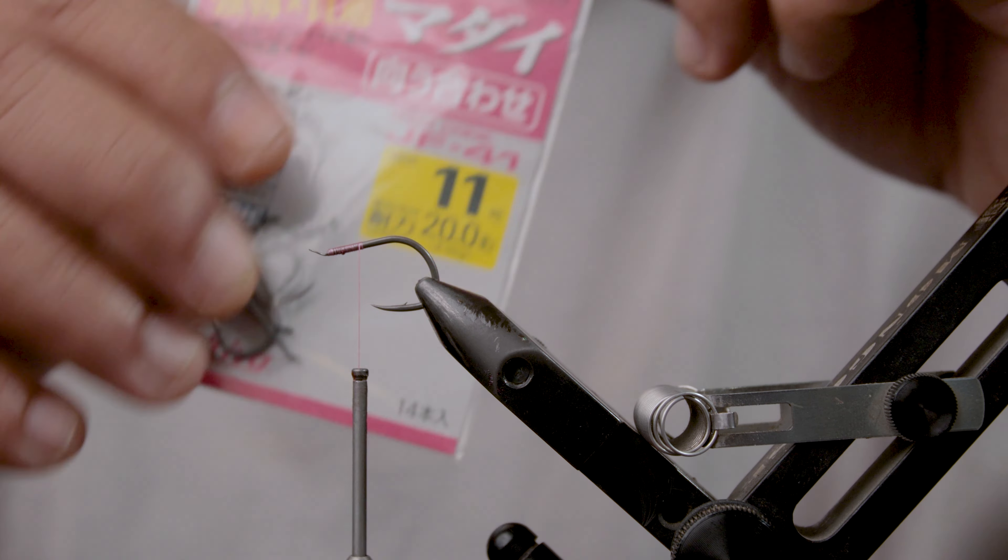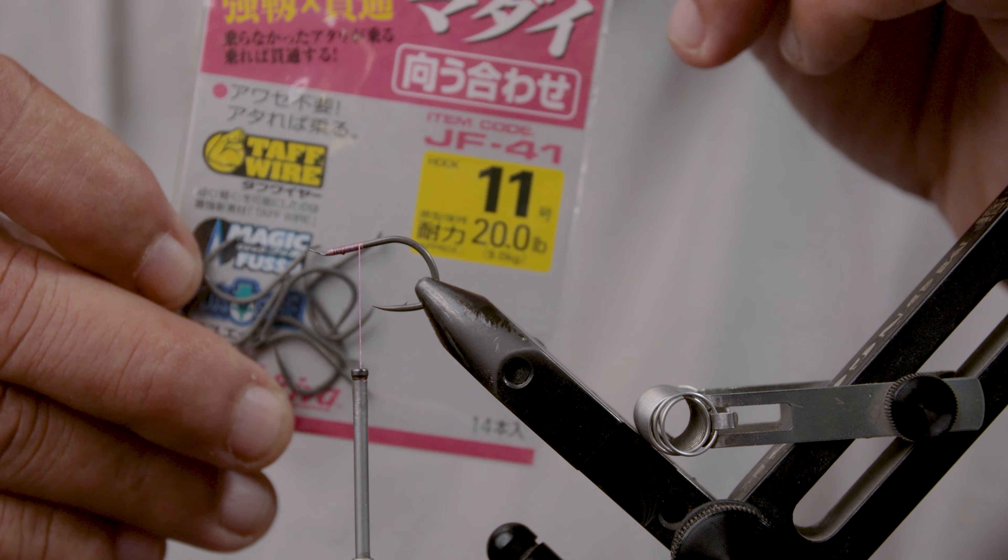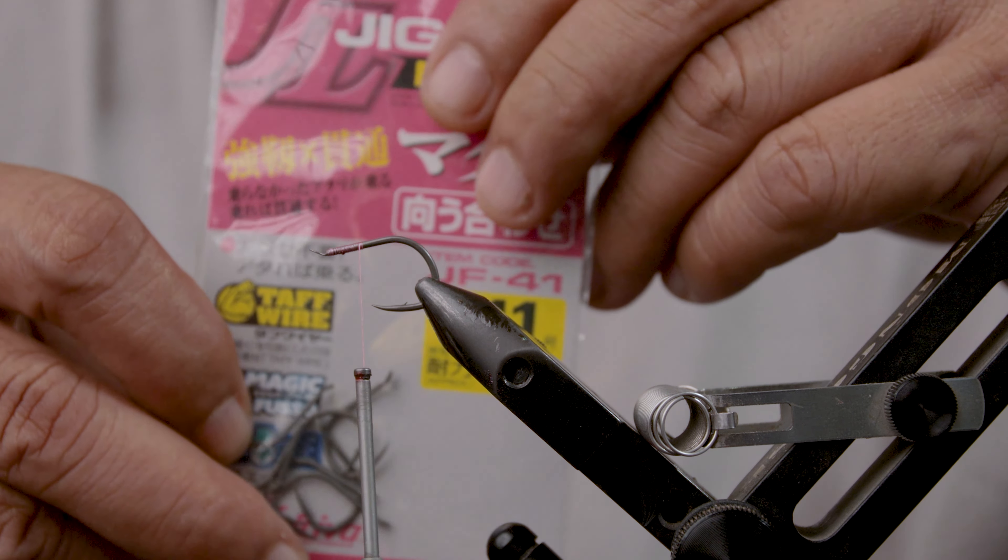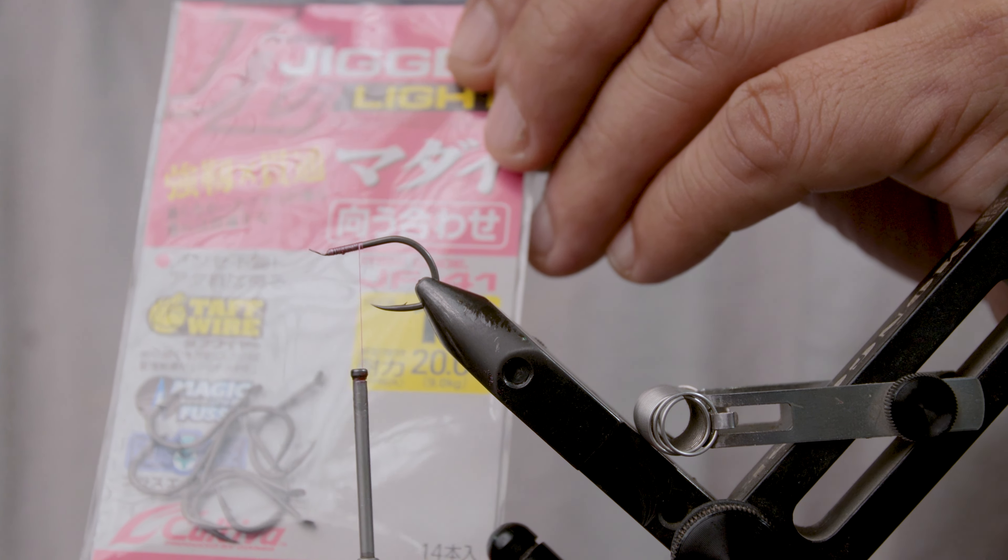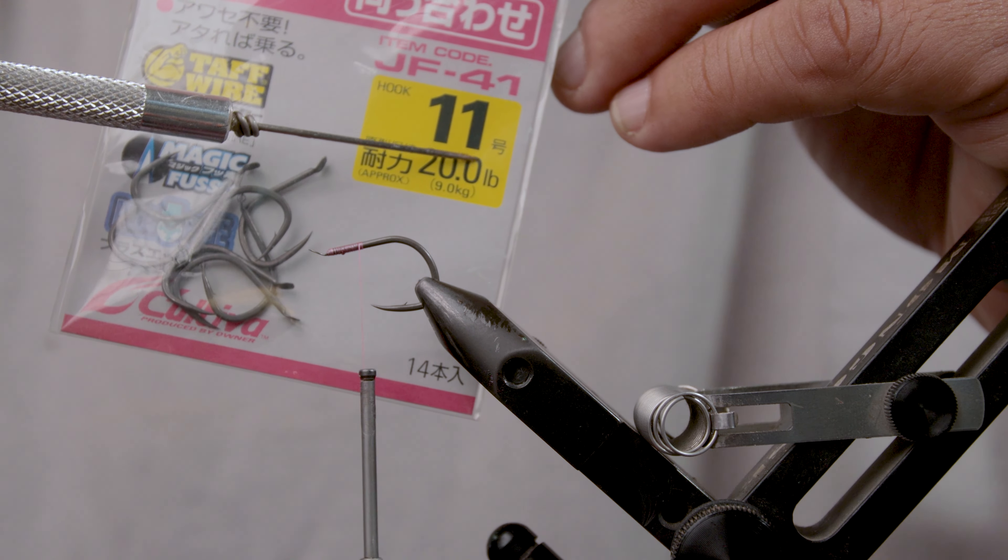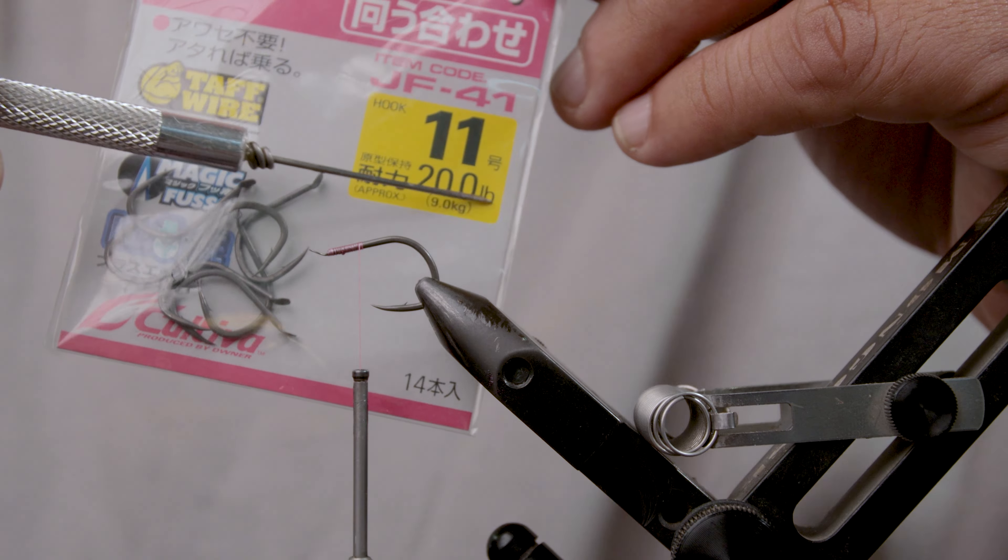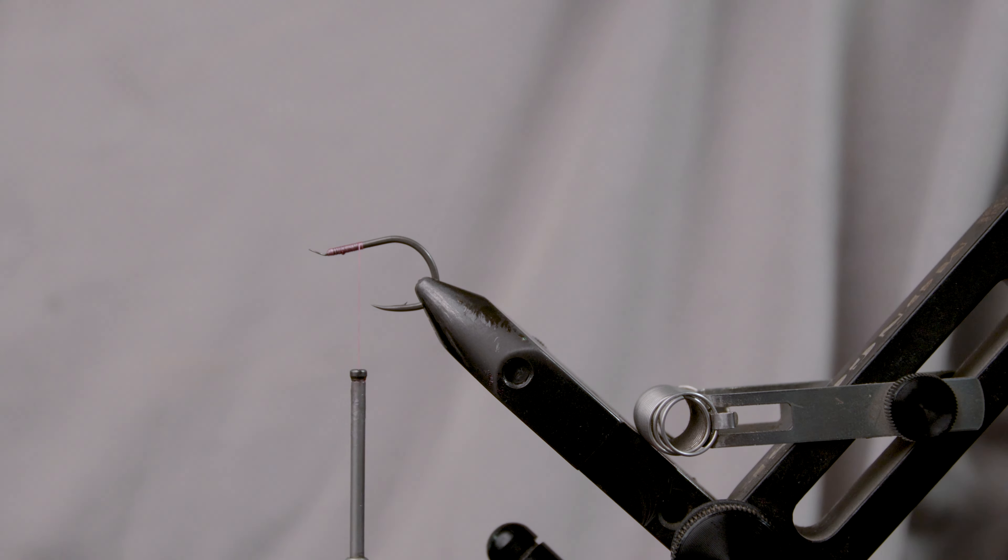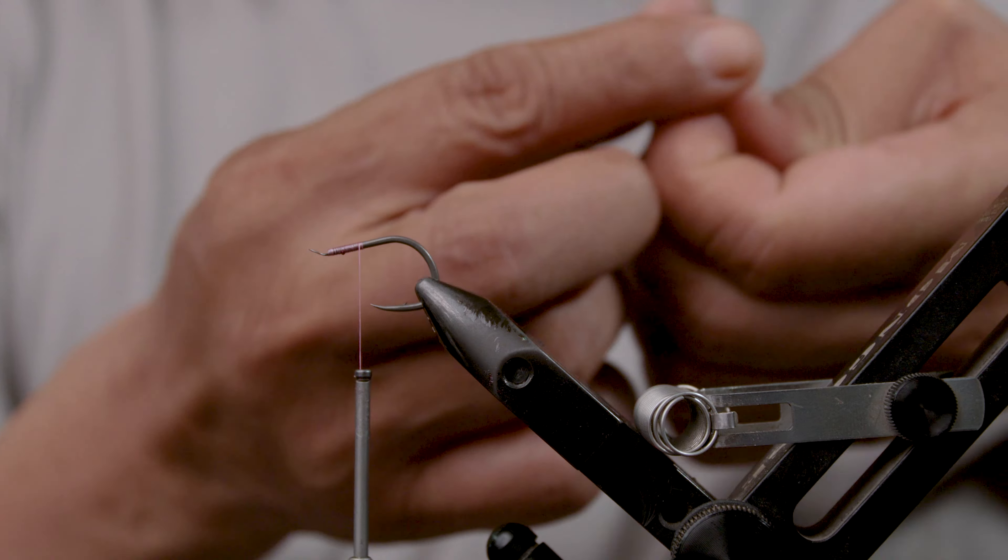This hook is an Owner JF41 number 11. It's small wires, thin, and there you go, it's 20 pounds or 9 kilos capacity. So for such a tiny hook, it's quite strong.